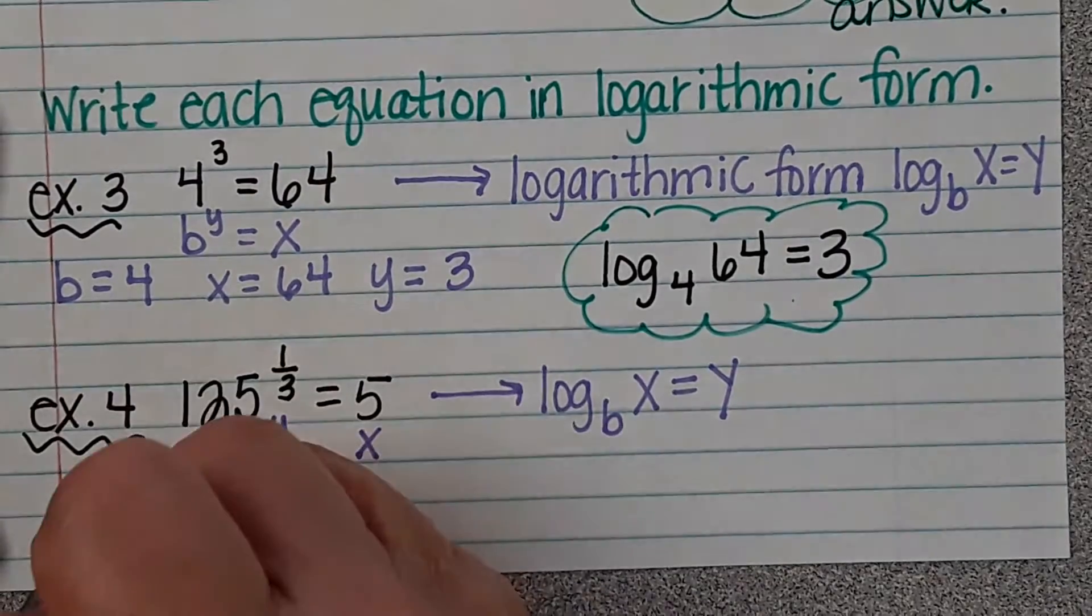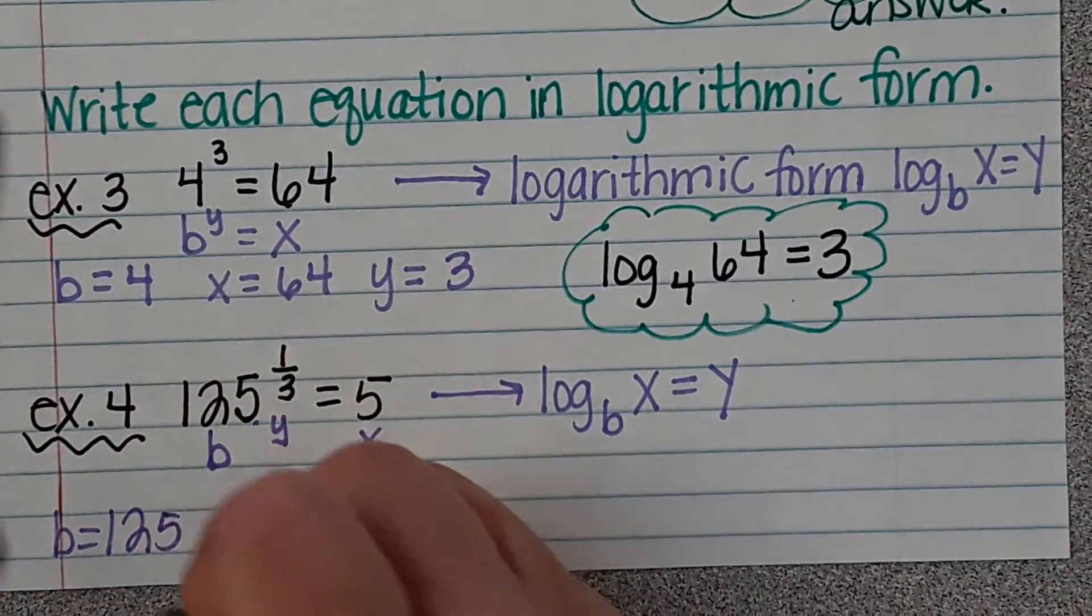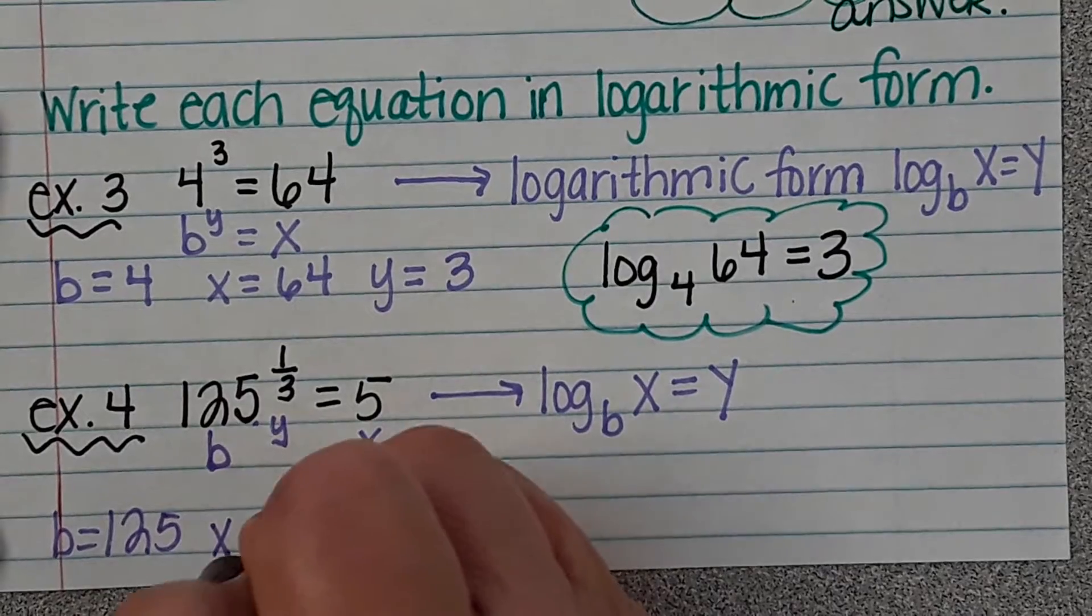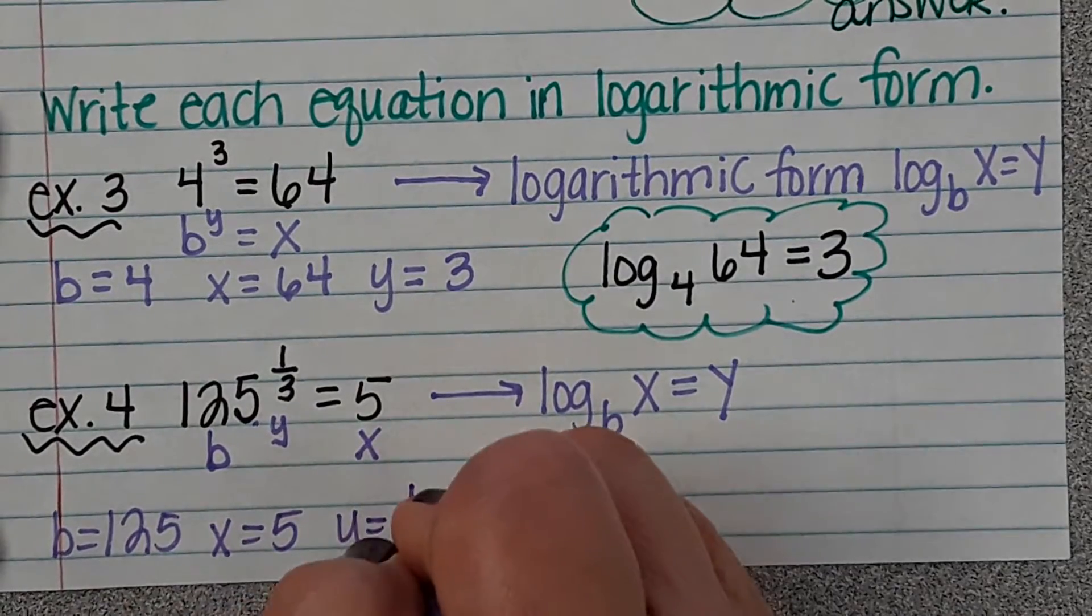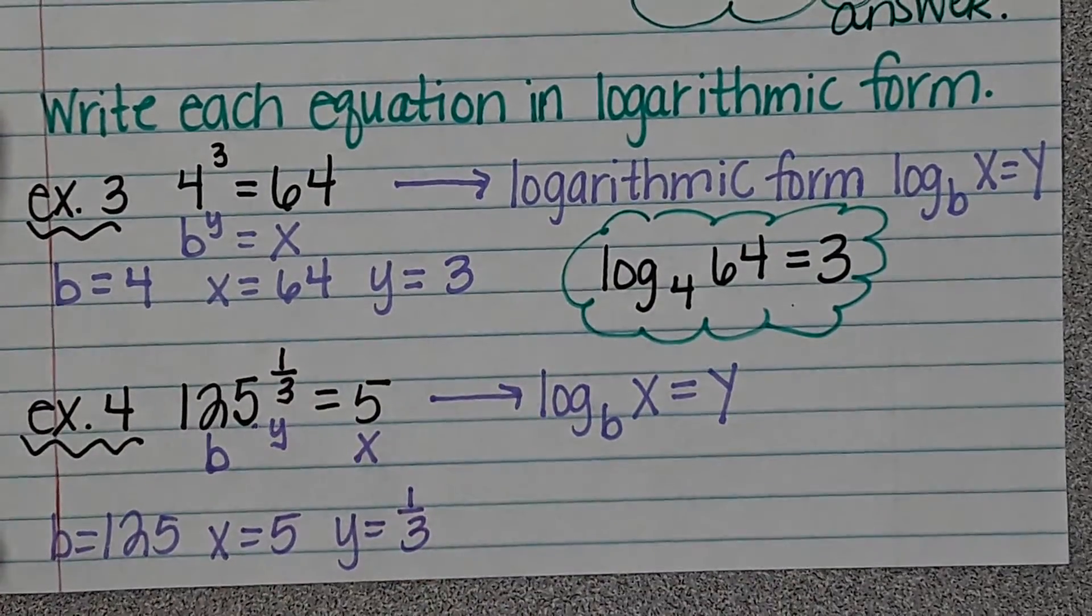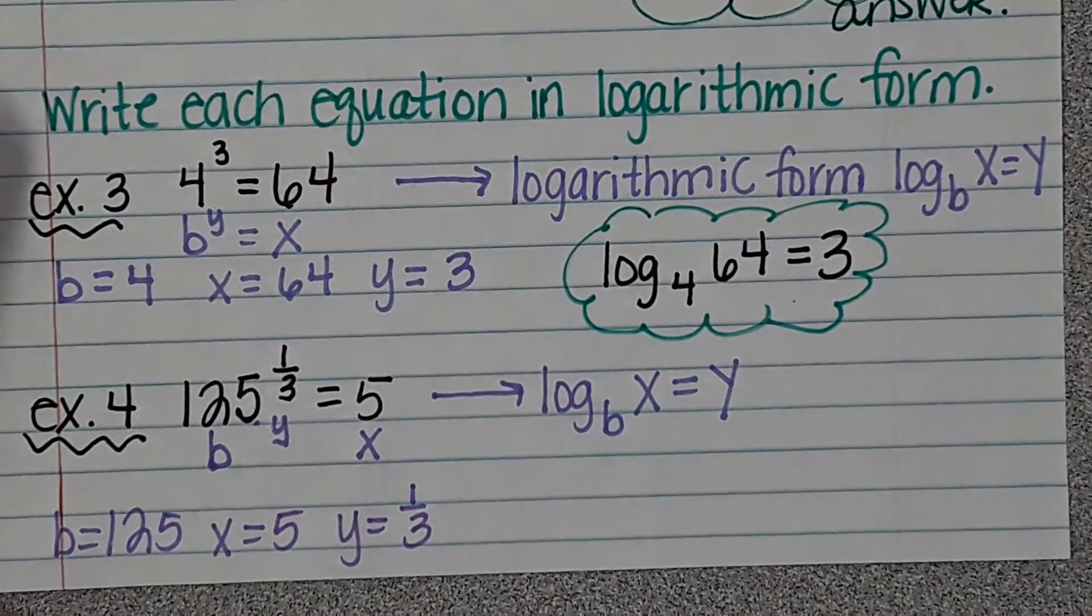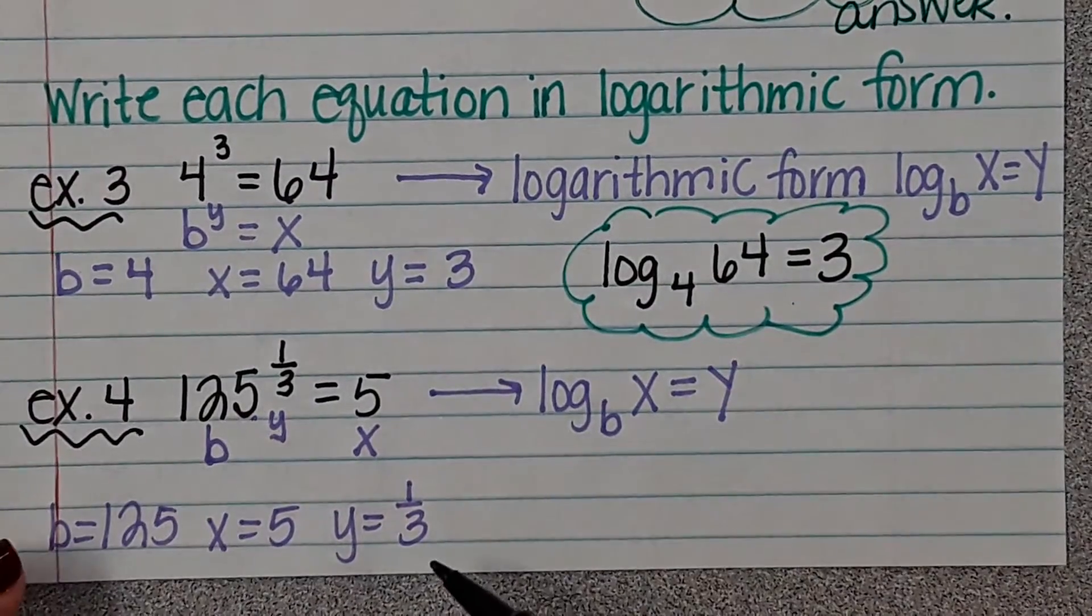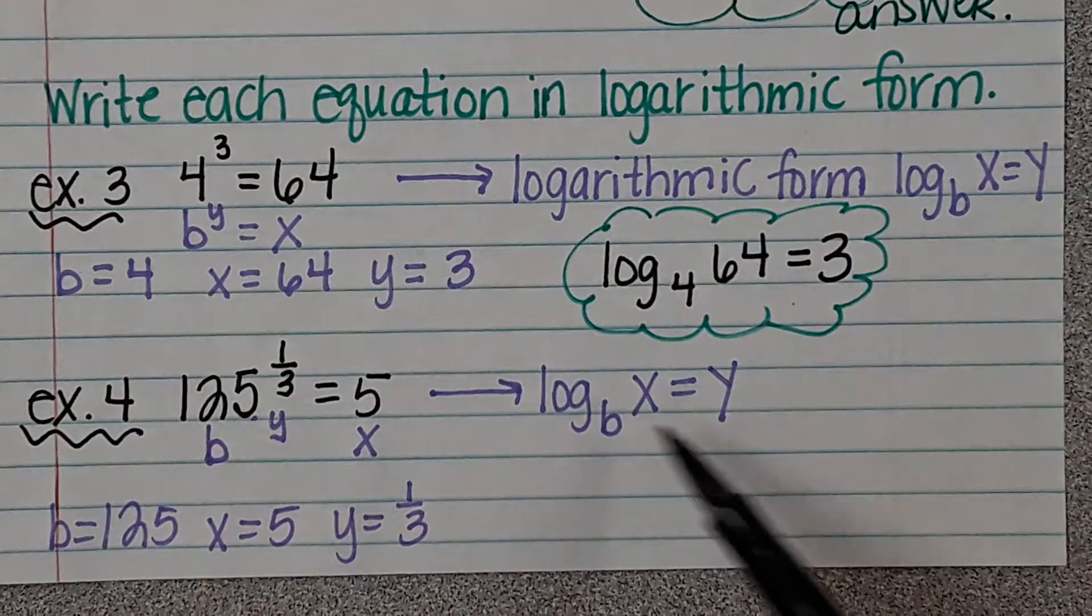b is 125, x is 5, y is 1/3. We're going to take this information and we're going to put it right in here.